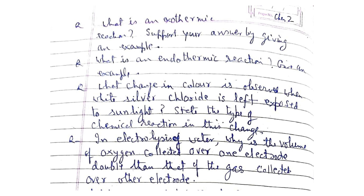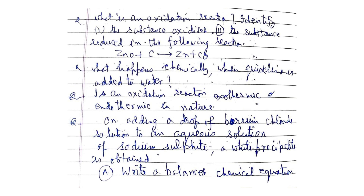In electrolysis of water, why is the volume of oxygen collected over one electrode double that of the gas collected over the other electrode? What is an oxidation reaction? Identify the substance oxidized and the substance reduced in the following reaction: ZnO + C → Zn + CO.